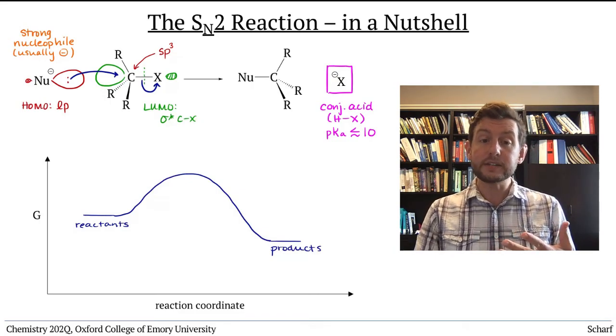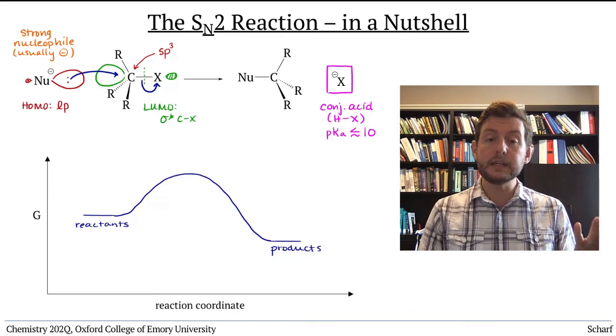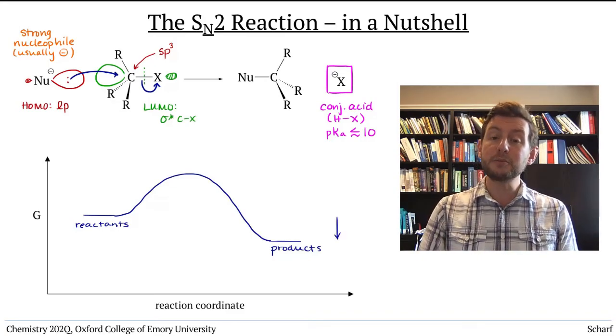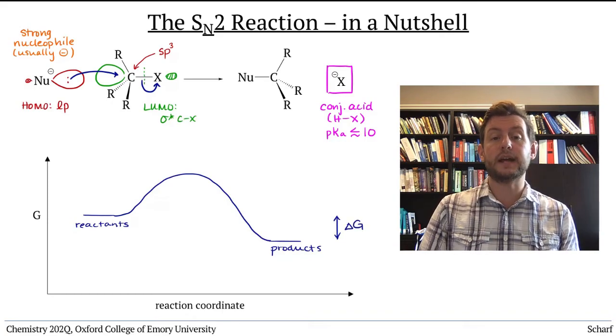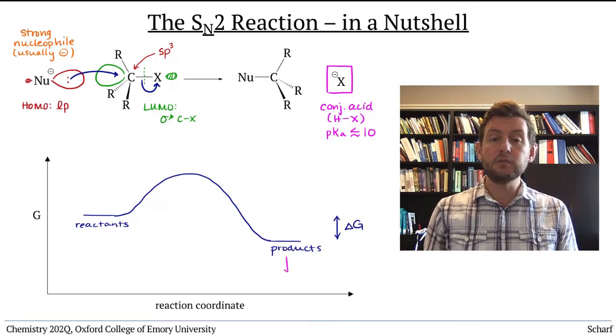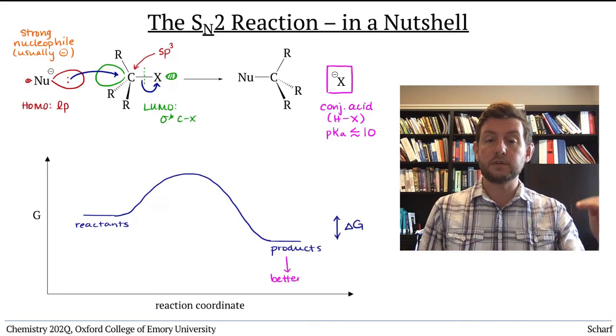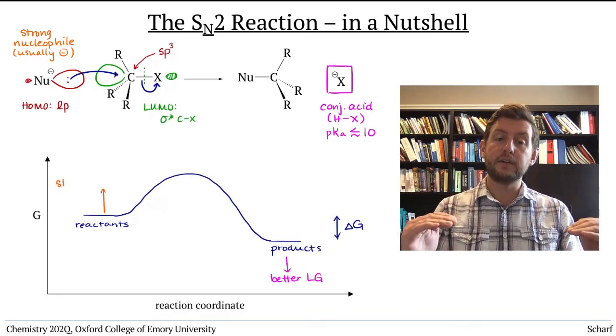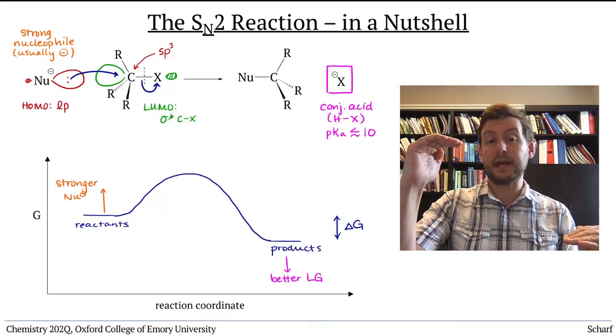These two factors, leaving group ability and nucleophilicity, affect the thermodynamics of SN2 reactions. The better the leaving group, the lower the energy of the product, and the stronger the nucleophile, the higher the energy of the reactants.